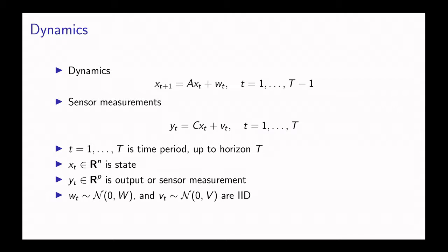Which is going to be some linear function, defined by the matrix C, of the state and then plus some noise v. We're going to assume that the noise w and v are both IID.